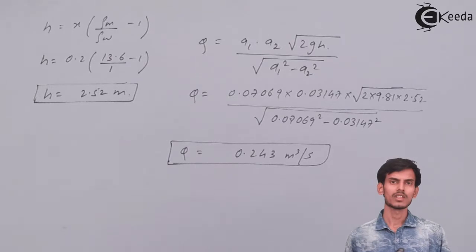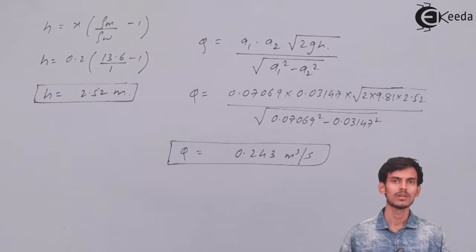So after substituting the values of A1, A2 and H and calculating we get the value of discharge as 0.243 meter cube per second. So that's the answer.